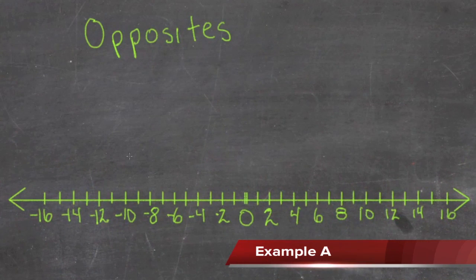Opposites are numbers that add together to be 0. Any two numbers that are the same distance from 0 on the number line on opposite sides are going to be opposite numbers.